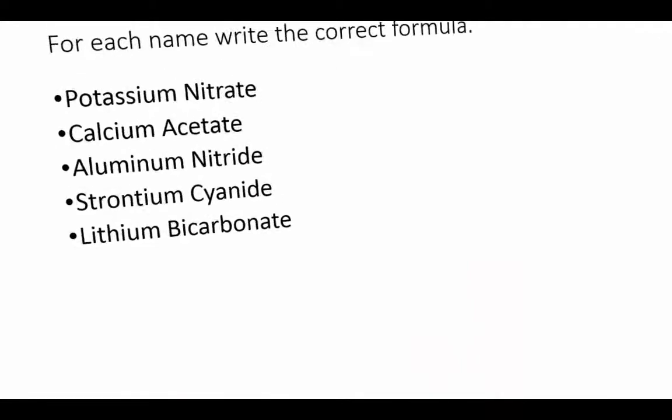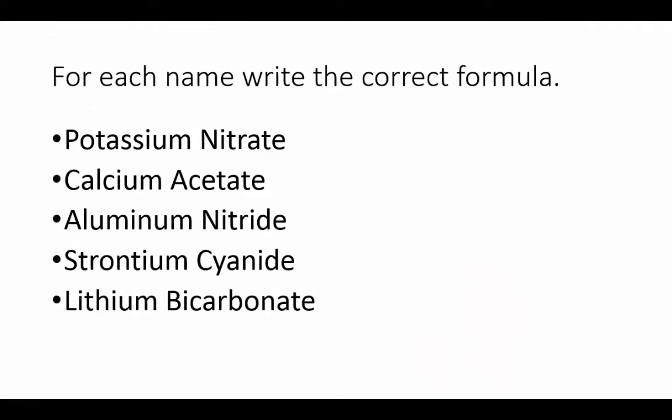Now it's time for you to practice. In a minute you'll pause the video and write down these names, then come up with the correct formulas. Remember: write down the cation with its charge, write down the anion with its charge, and keep adding cations and anions until the charges are the same and the net charge is zero. Go ahead and pause the video now and write the correct formulas for these compounds. Then restart the video and see if you did them correctly.